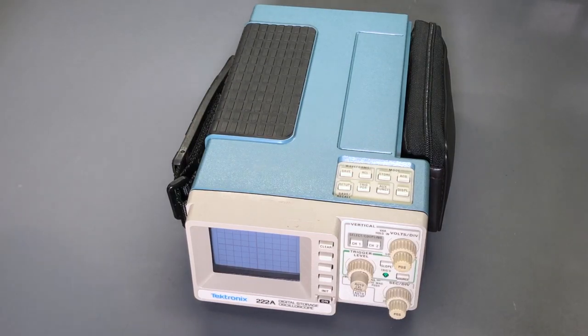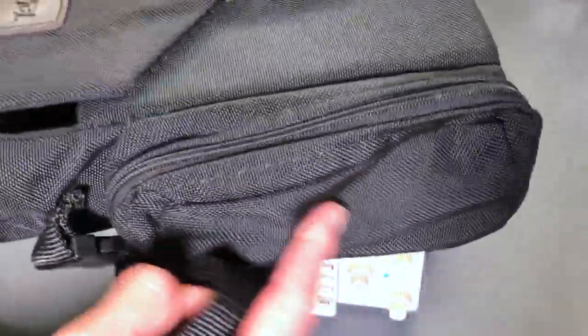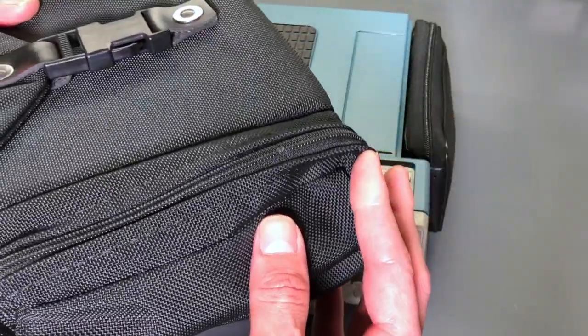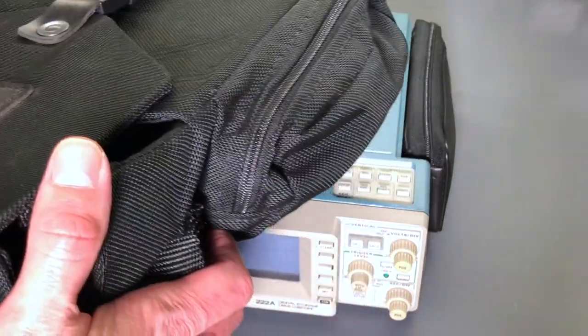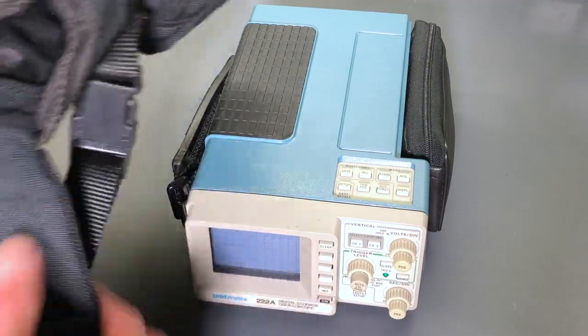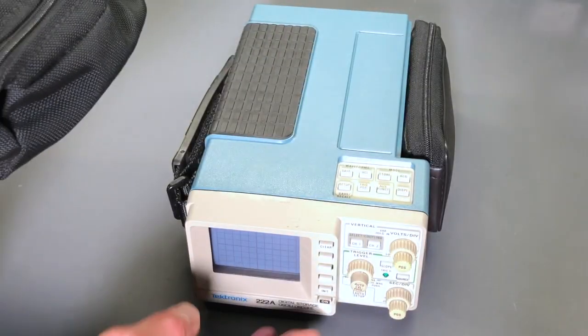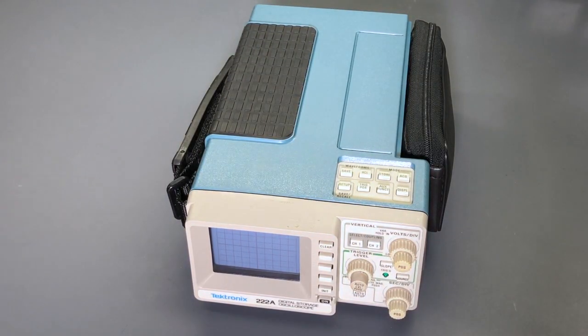Also there's a carrying case that goes with it, a nice original case with more storage on the side over here. You can unzip that and unzip the side so that the probes can come through and it can be in here. One thing you want to watch out for is the power button on the front. You don't want it to be touching the front when this flap closes and ends up actually turning on the scope. You need to watch out for that. But otherwise a well-made case and nice to have that as well with it.